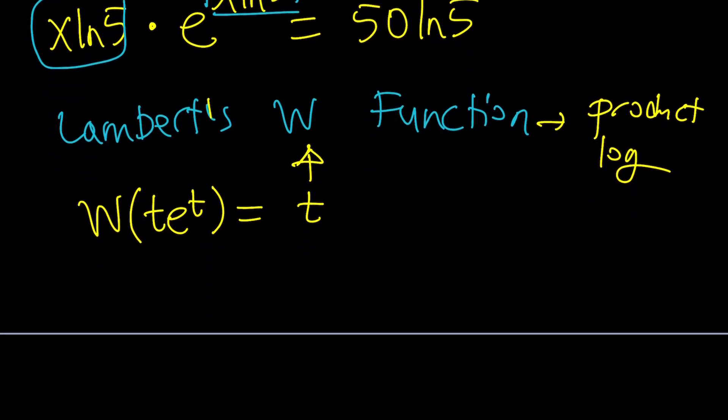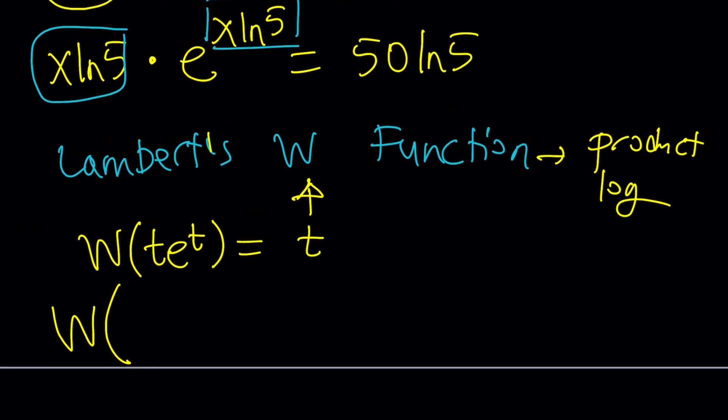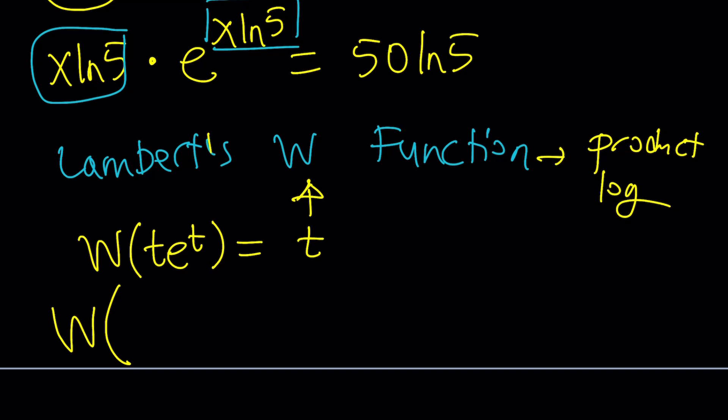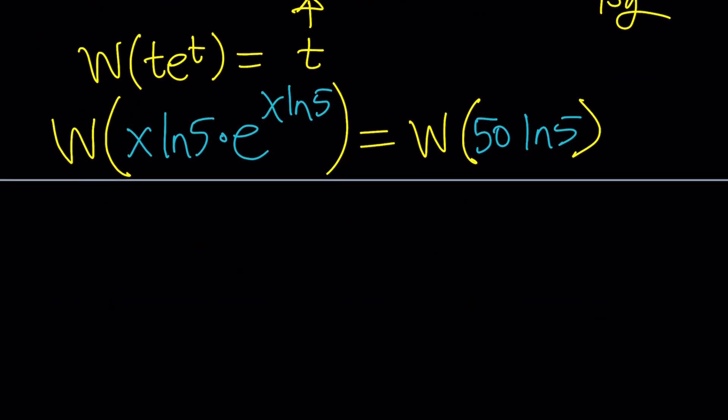So let's go ahead and apply it on both sides. So we're going to have W of x ln 5 times e to the x ln 5 equals W of 50 ln 5. I'm just trying to change the color here. Now, we applied Lambert's W function on both sides and when it's applied on T e to the T right here, this should give us x ln 5 because remember, that's our T, right? Or coffee, whatever you like.